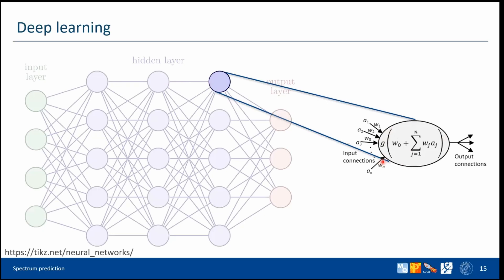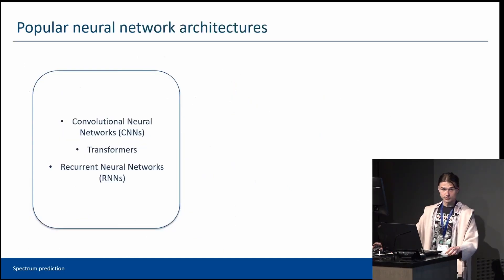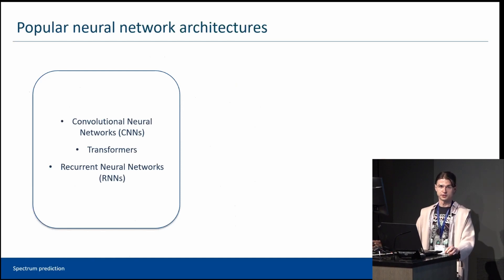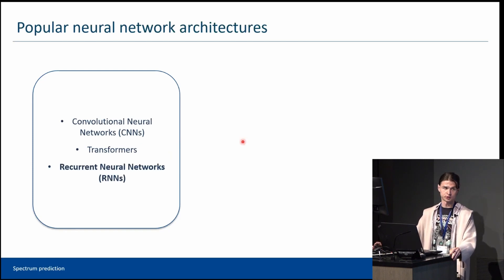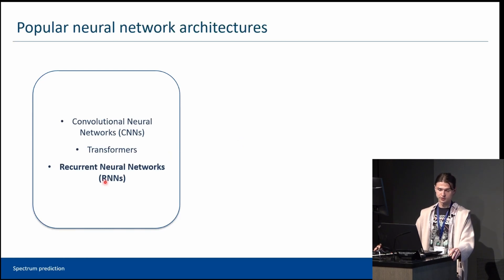One of the hallmarks and main advantages of deep learning is the ability of neural networks to directly learn higher-level concepts from the original data without additional feature engineering, which simplifies pre-processing. However, to train such models you will need considerably more data and computational resources. Many advanced neural network architectures have been developed for specific tasks. Among the most popular are convolutional neural networks, recurrent neural networks, and transformers — all of which have been applied to spectral prediction. Particular success has been achieved with recurrent neural networks, and transformers are gaining more traction.